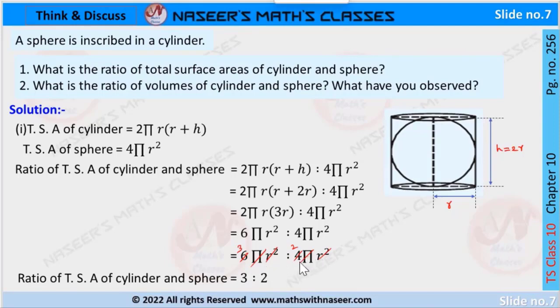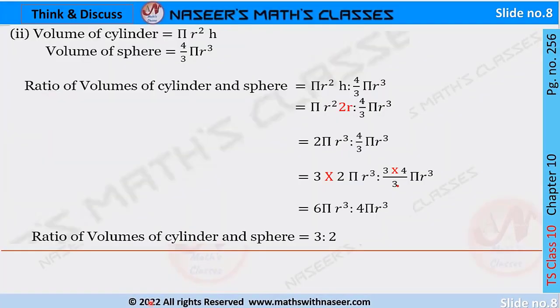After cancelling, we get 6 : 4, which simplifies to 3 : 2. Therefore, the ratio of the total surface area of the cylinder to the sphere is 3 : 2. Now we are going to solve the second part — volume of the cylinder.